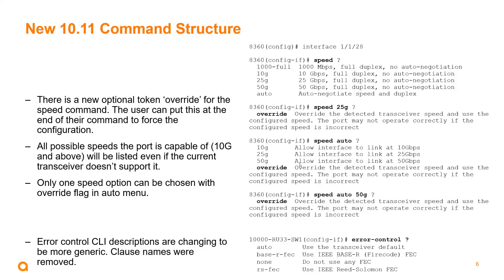Going back to the override option, there's now a new optional token called override for the speed command, and the user can put this at the end of their command to force the configuration. All possible speeds the port is capable of above 10 gig will be listed even if the current transceiver doesn't support it. Only one speed option can be chosen with the override flag in that auto menu. Looking at the workflow on the right, when we run a speed command like speed 25 gig and run the question mark, the override command option is right there. Similarly, with the auto command and the question mark, or doing auto to 50 gig, the override option is still available — it's been added to the end of each of these commands to force that configuration.